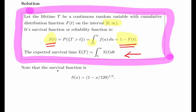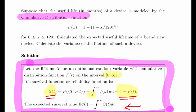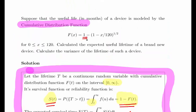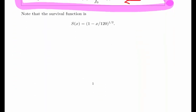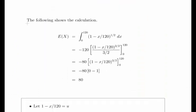Note that the survival function is S(x) = (1 - x/120)^(1/2). Notice that 1 minus there - so essentially what we're looking at is this part here. This is a straightforward integration.